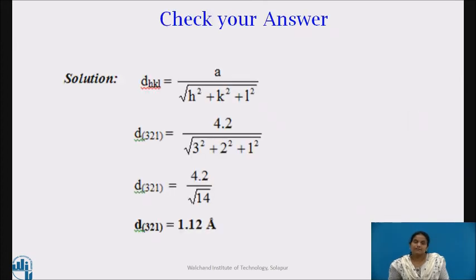Dear students, please check your answer. The answer is interplanar spacing for 321 plane is 1.12 angstrom unit.